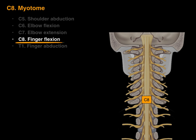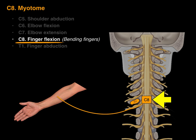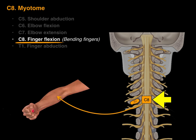C8 is finger flexion, or bending of the fingers. There we have the C8 spinal cord level and the C7 vertebra — this is the funky one where the C8 spinal nerve courses below the C7 vertebra — and then it goes to a group of muscles that cause flexion of the fingers.